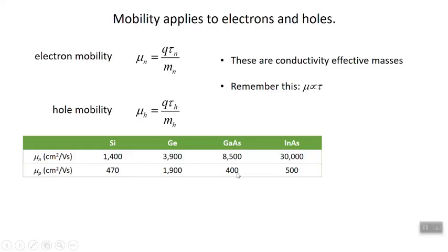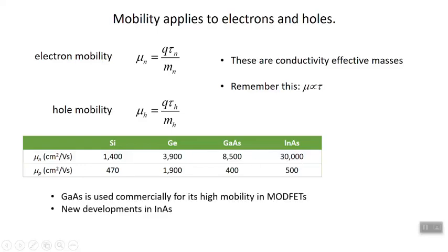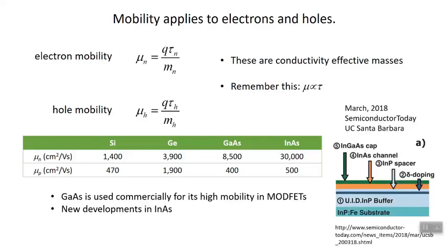The mobility varies with doping. These are pure materials. Looking at indium arsenide, gallium arsenide and indium arsenide are referred to as high mobility semiconductors. Gallium arsenide is used commercially in MODFETs, which I've mentioned before. We're going to cover it in detail, I think it's in chapter six.